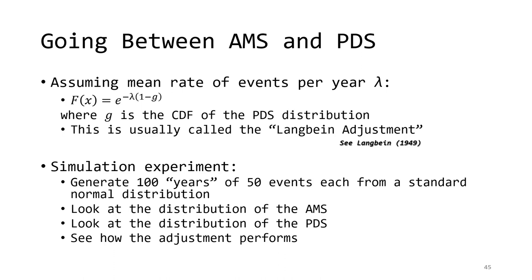An important question is that if you use a partial duration analysis, how do you get annual exceedance probabilities, which are needed for risk-informed decision making? We recorded the average rate of events lambda because it can be used to convert between PDS and AMS analyses. This comes from an old paper by Walter Langbein in 1949, which still gets great usage today. You can get the cumulative probability for an annual maximum distribution — also known as the non-exceedance probability — using the cumulative probability from the PDS distribution and the mean rate of events. A synthetic experiment will show this adjustment in action: we will generate 100 synthetic years, each containing 50 events from a standard normal distribution, then fit an AMS model using the GEV distribution and a PDS model using the GPA distribution, and use the Langbein adjustment to convert the PDS result to its equivalent AMS frequencies.